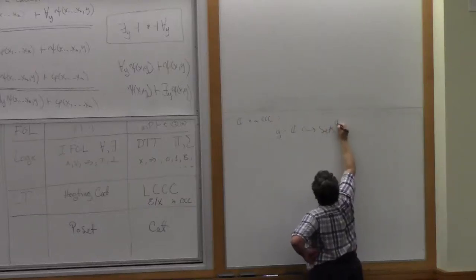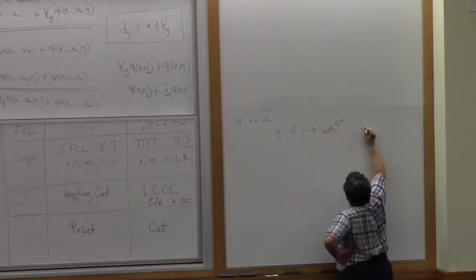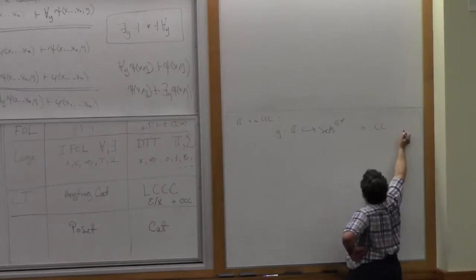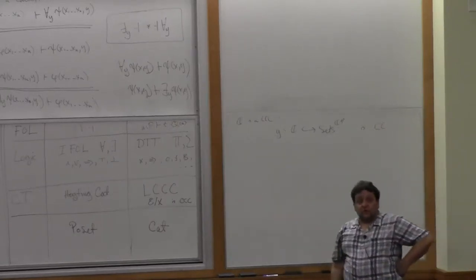Into pre-sheaves on C is a Cartesian-closed functor. That is, it preserves all the Cartesian-closed structure.